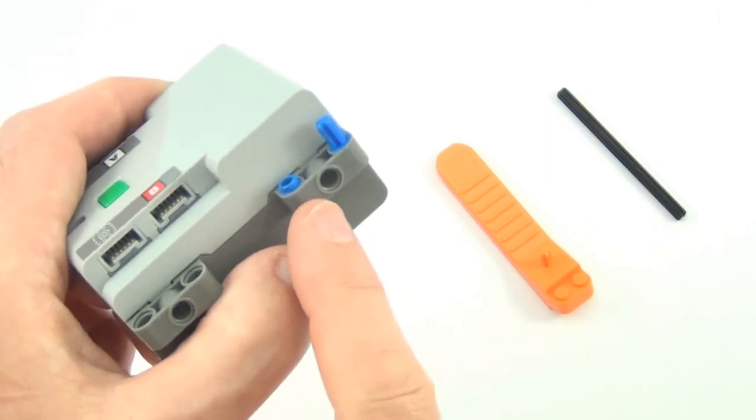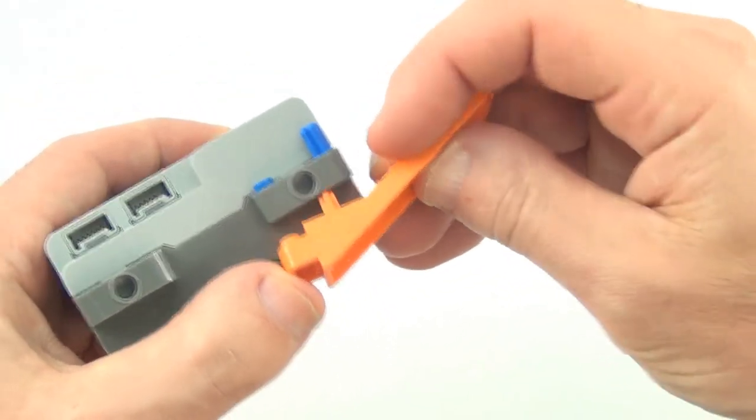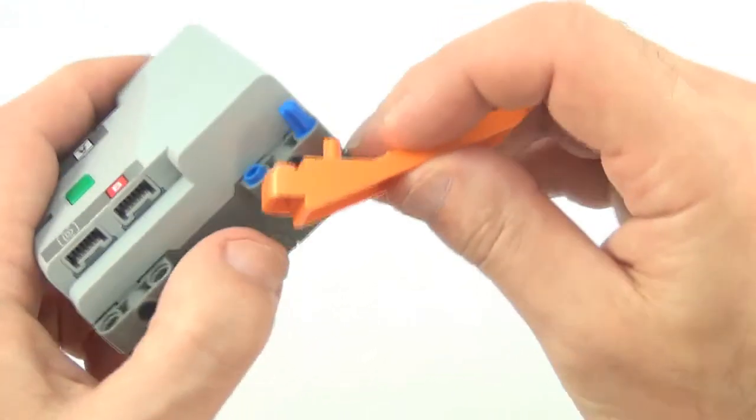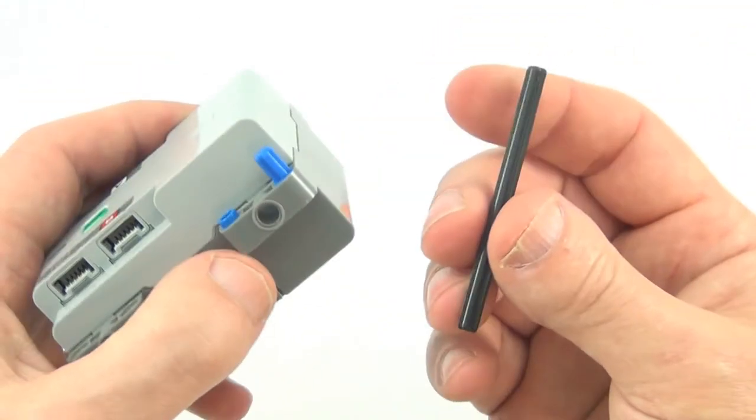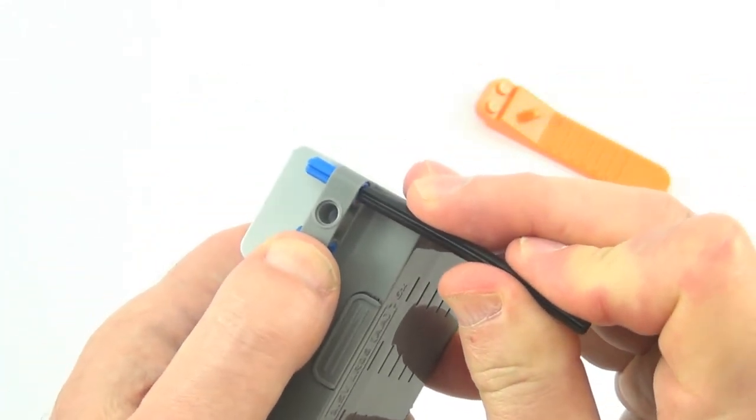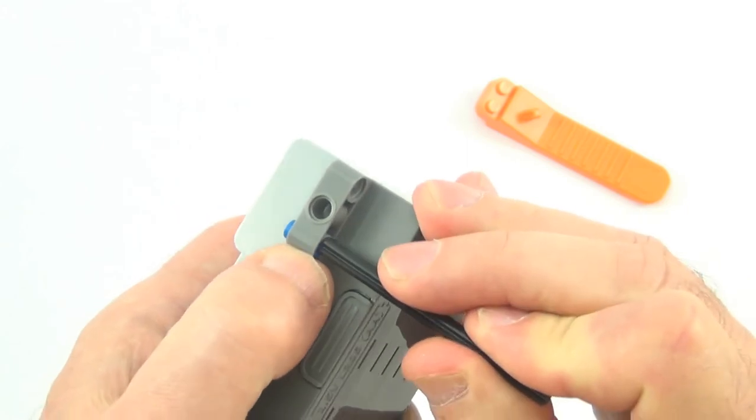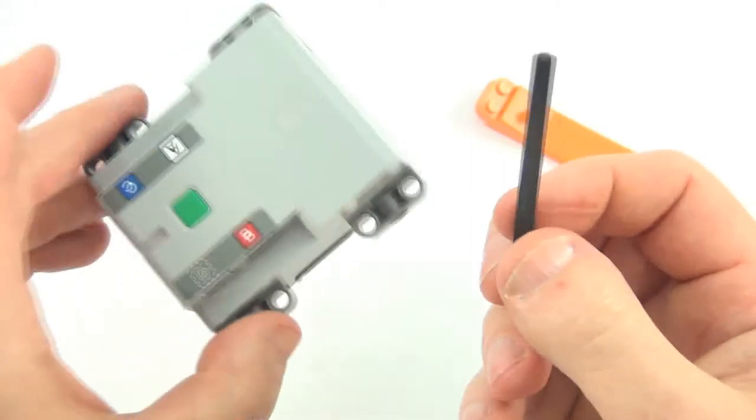Sometimes you may want to remove pins and your brick separator can't actually get in because there's not enough space. So this is where a standard axle may be easier, just by simply pushing through from the other end, and in this case a standard axle has done the job.